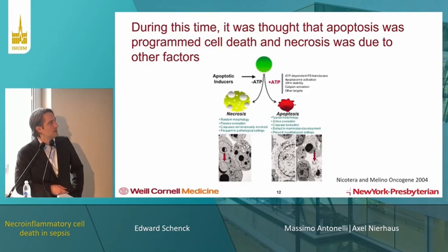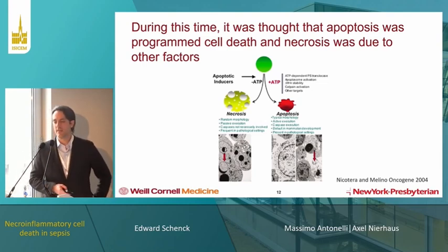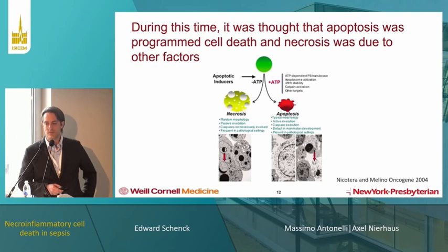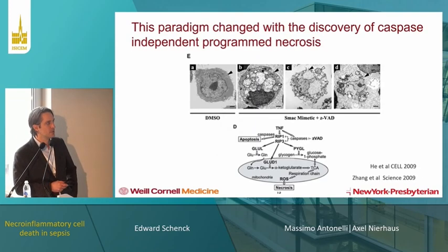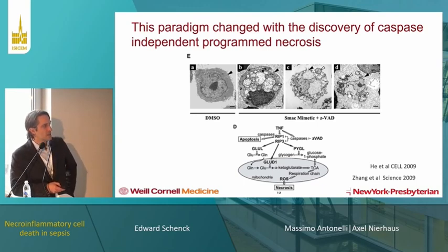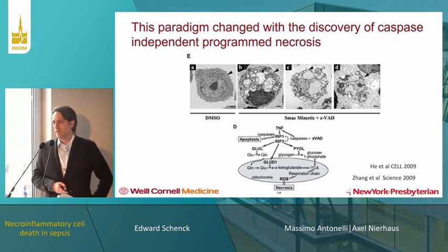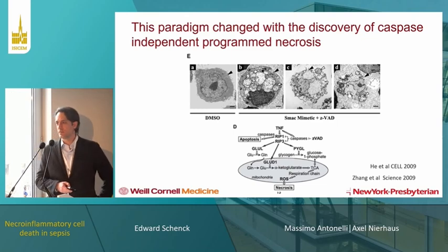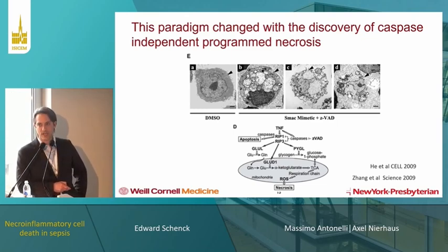Apoptosis was once thought to be the only programmed cell death, and although histology demonstrated necrosis in many tissues in septic patients, this was attributed to loss of ATP or plasma membrane integrity rather than a natural cellular process. But we know more now. Papers published almost simultaneously in Cell and Science described caspase-independent cell death with a necrotic appearance and release of intracellular content — mainly in response to caspase inhibition. The executors of these types of cell death are the RIP kinases.